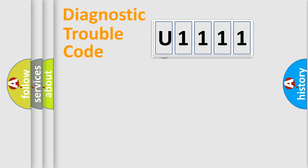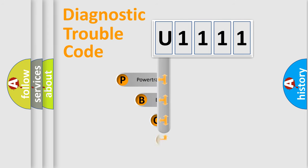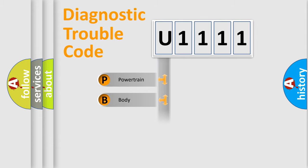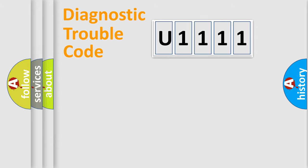Let's look at the history of diagnostic fault code composition according to the OBD2 protocol, which is unified for all automakers since 2000. We divide the electric system of an automobile into four basic units: Powertrain, Body, Chassis, and Network.